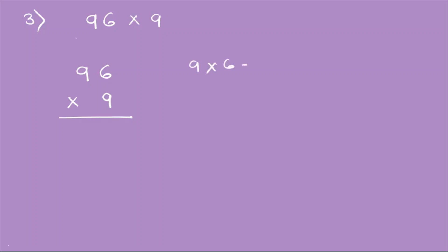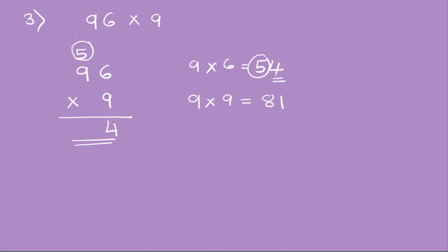Now let's start to multiply. First I will start with 9 times 6. 9 times 6 equals 54, but I will not write 54 down here — I will just write 4 in the units place and carry the 5. Now 9 times 9 equals 81, but we can't just put 81 right over here because we have to add this carried 5 to 81.